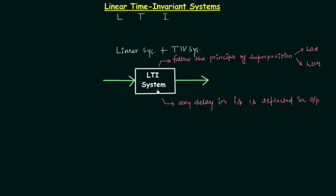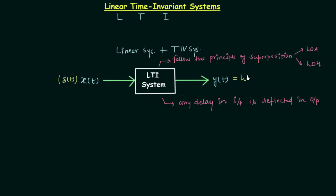The LTI system will possess these two properties. As per the notation we are following, the input will be represented by x(t) and the output by y(t). There is one important parameter known as impulse response. The impulse response means the output of the LTI system when the input is an impulse — x(t) is delta(t).